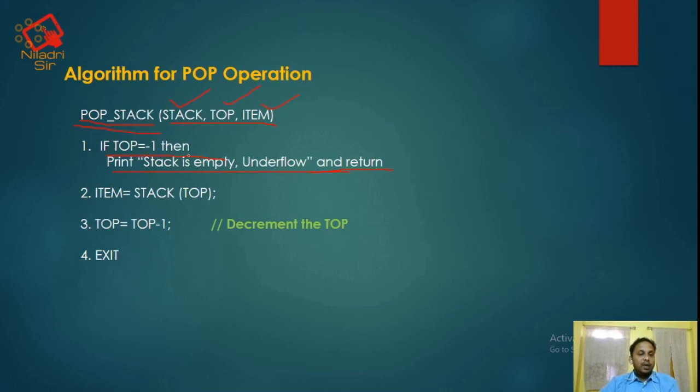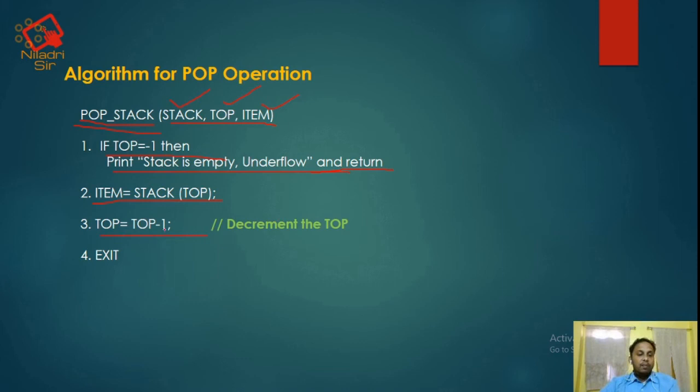Going back to the algorithm: if top equals minus 1, we cannot delete — we will print 'stack is empty' or underflow condition and return. If the top is not minus 1, then item equals stack of top — the topmost element will be deleted. And the value of top will be decremented by 1: top equals top minus 1. Then exit.